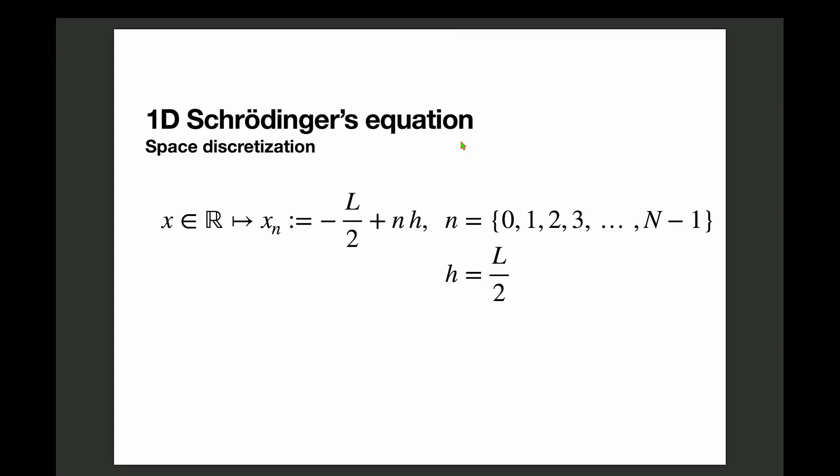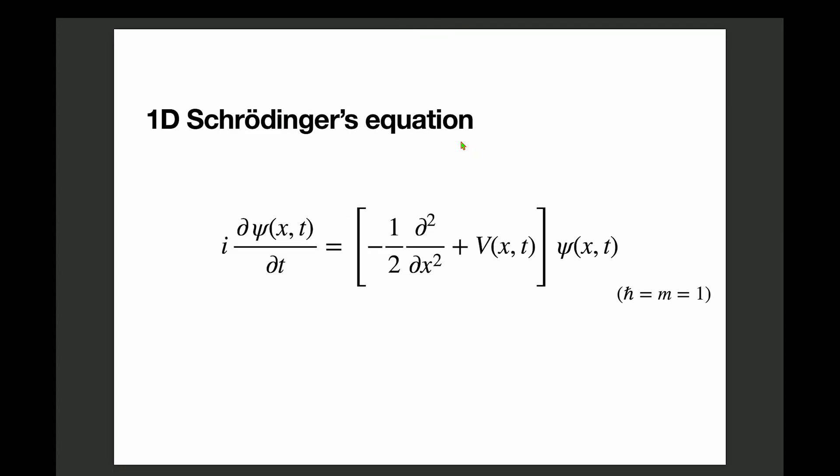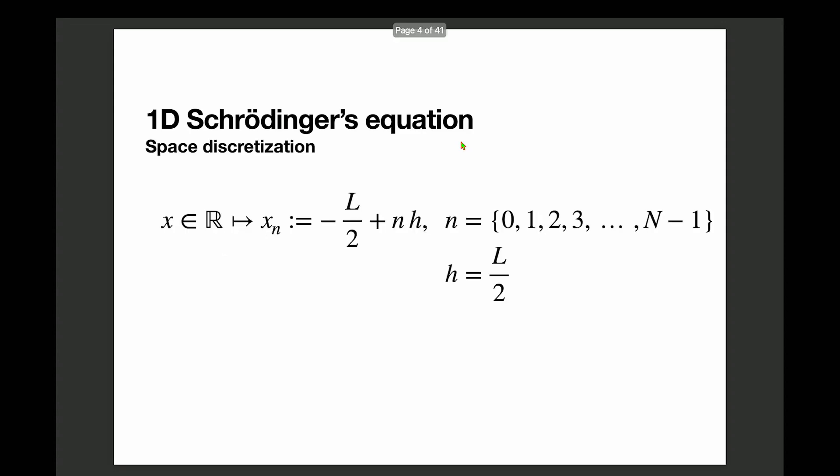The first thing you might think is that we have a continuous differential equation — how do we put it in a computer? Computers don't talk about continuous numbers. The solution is to take a finite approach: we discretize the real space into a set of points on a grid. I parametrize it as a line from minus L over 2 to L over 2, with N capital points. So that's the definition.